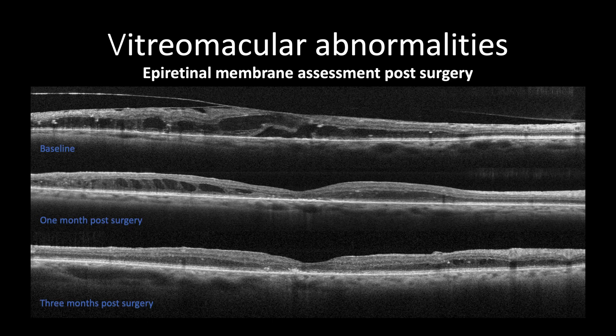In contrast, this case of diabetic maculopathy is complicated with broad vitreomacular tractions causing intraretinal cystic changes, macular detachment, and increased central macular thickness, as well as an epiretinal membrane which caused corrugation of inner retinal tissues. The best corrected visual acuity was counting fingers.